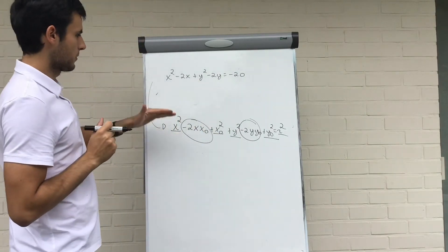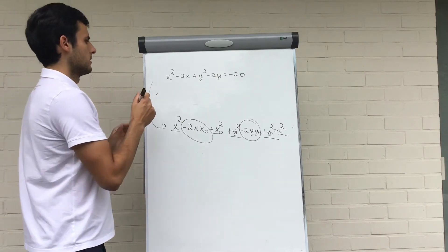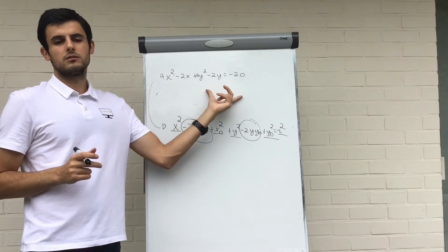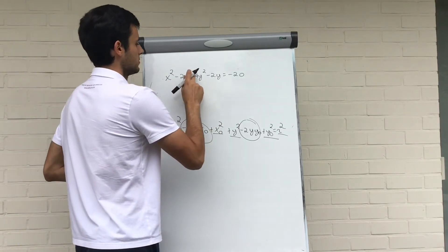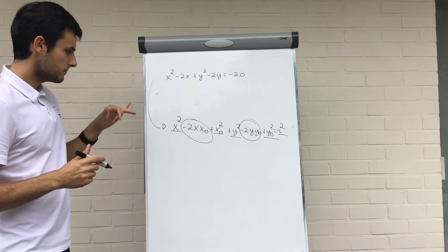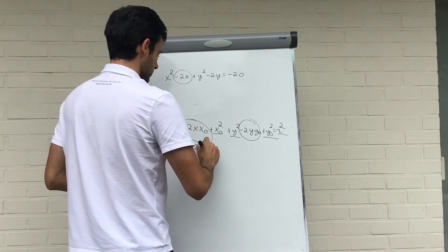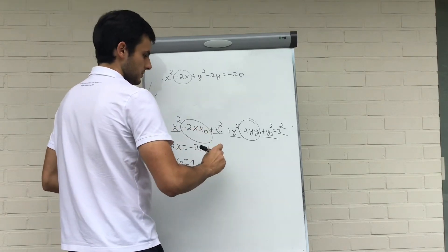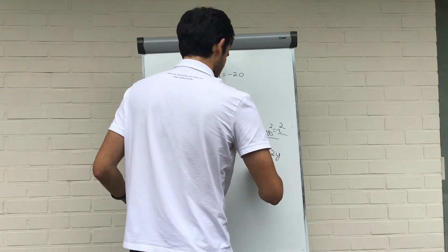Second example — same principle. x squared equals x squared, y squared equals y squared. If we had 4x squared and 4y squared, we would divide both sides by 4, but in our example it's just x squared and y squared, so we don't need to divide anything. This is the only term with x, so it must equal the corresponding term: minus 2x equals minus 2x·x₀, so x₀ equals 1. Same principle for y: minus 2y·y₀ equals minus 2y, so y₀ equals 1.